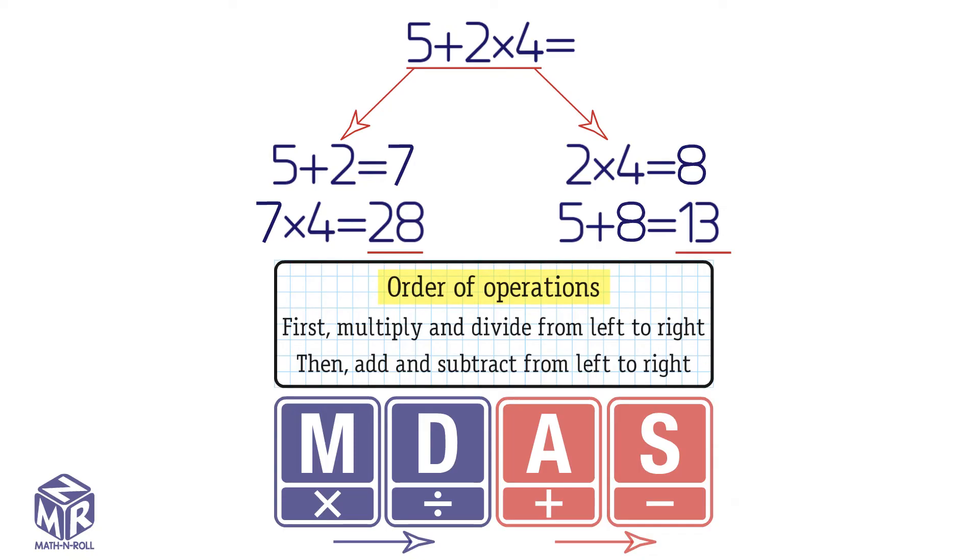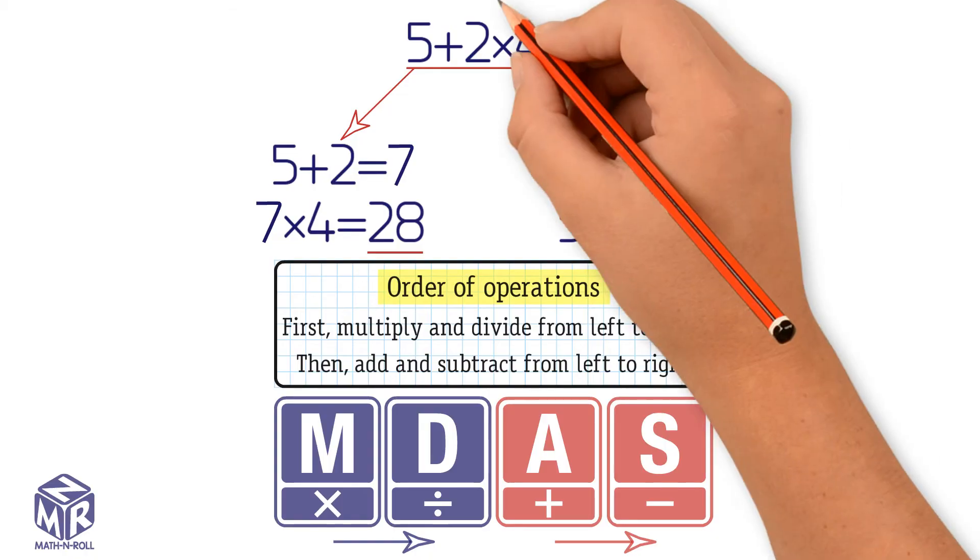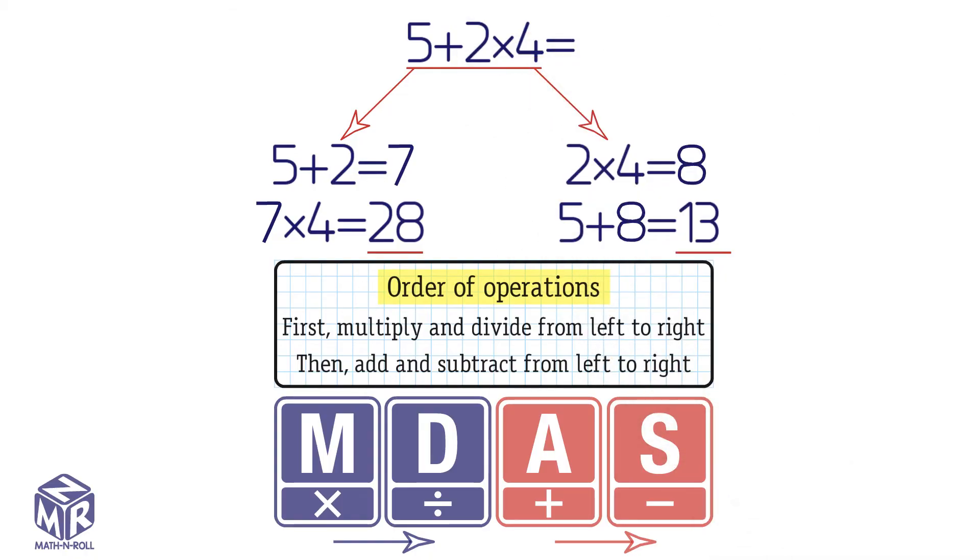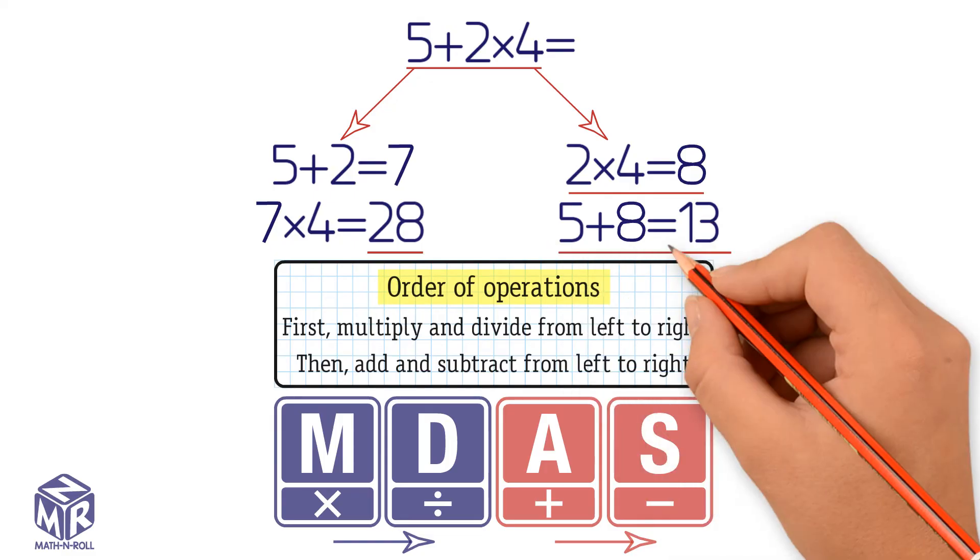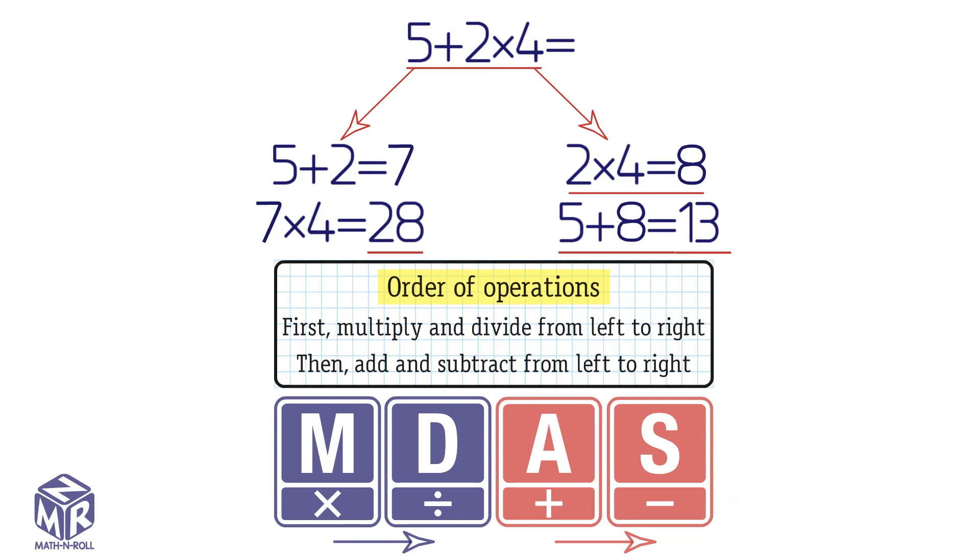Let's solve our problem using the order of operations. First, we multiply from left to right. 2 times 4 equals 8. Then, we add. Add 5 to 8 to get 13. So, the method on the right was correct, and the method on the left was wrong.